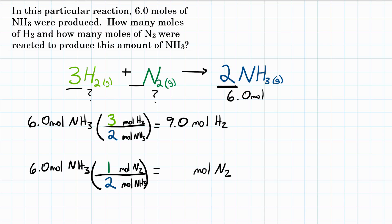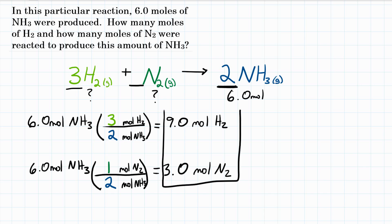To solve this problem, we're going to be multiplying 6 by 1/2, or essentially dividing by 2. That gives us 3.0 moles of N2 that must have reacted. So in this problem, 6.0 moles of NH3 was produced — how many moles of H2 and N2 must have reacted? 9.0 moles of H2 and 3.0 moles of N2.